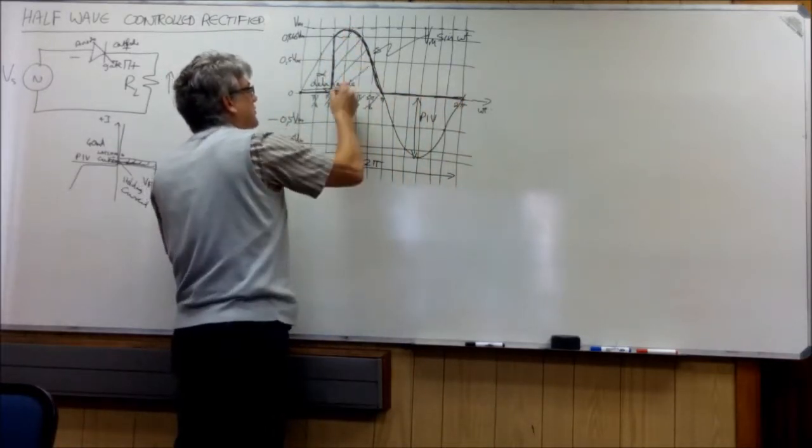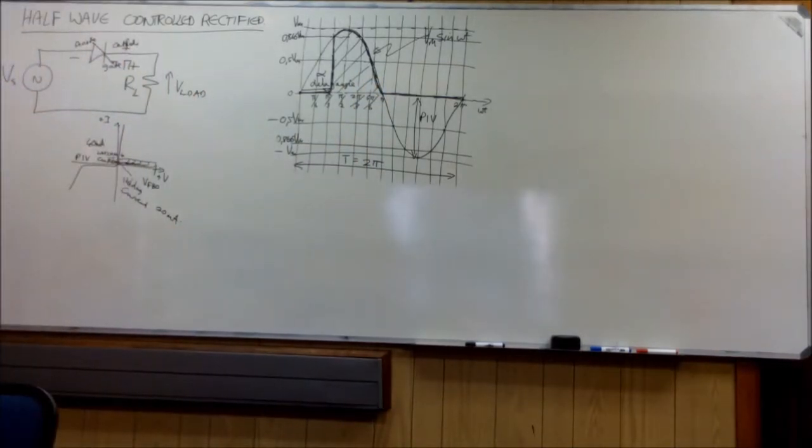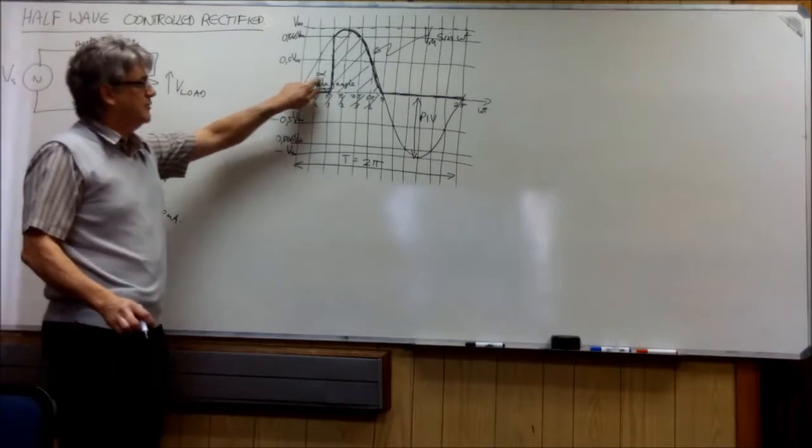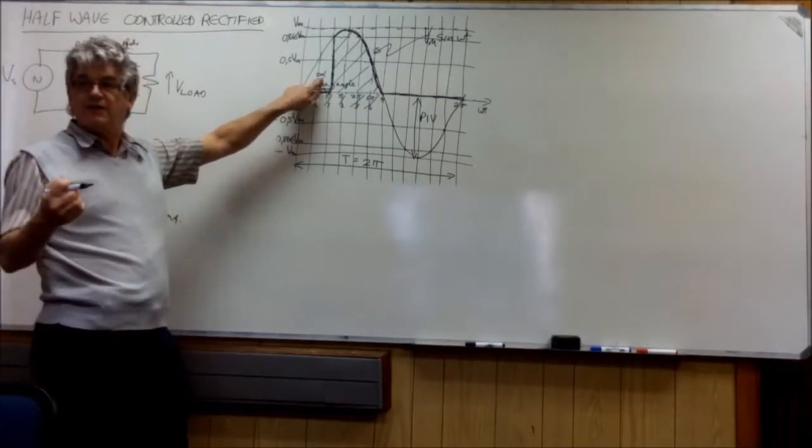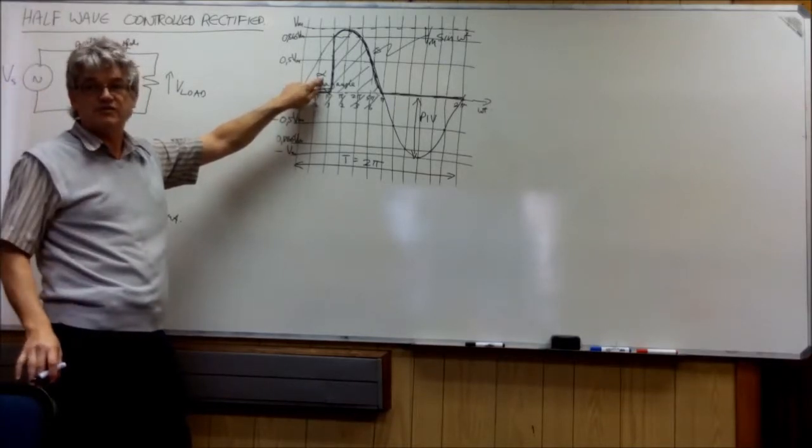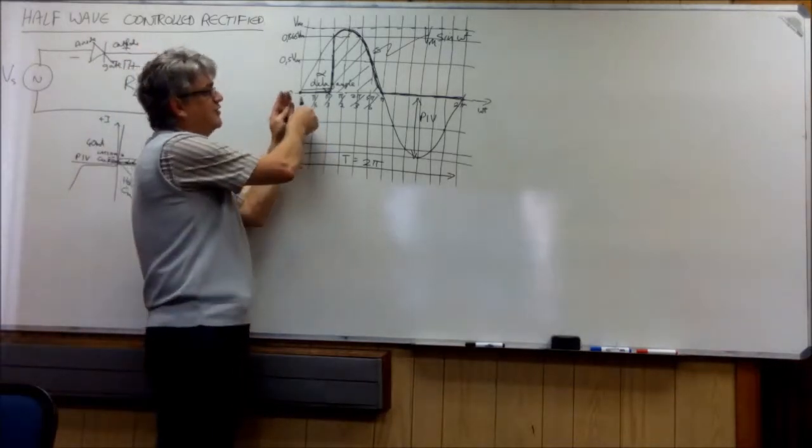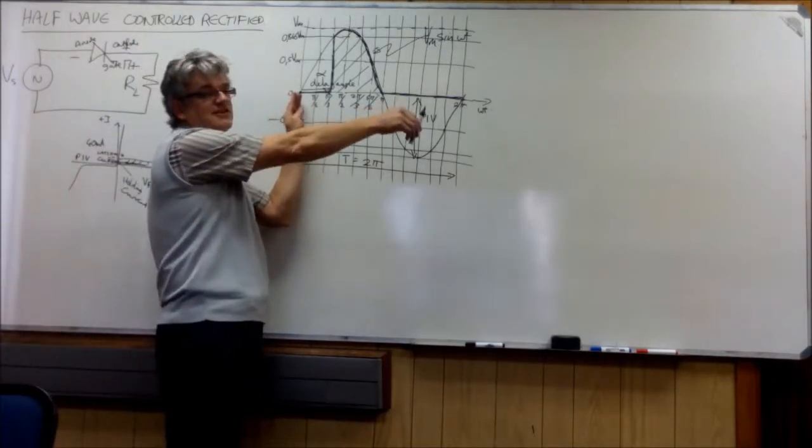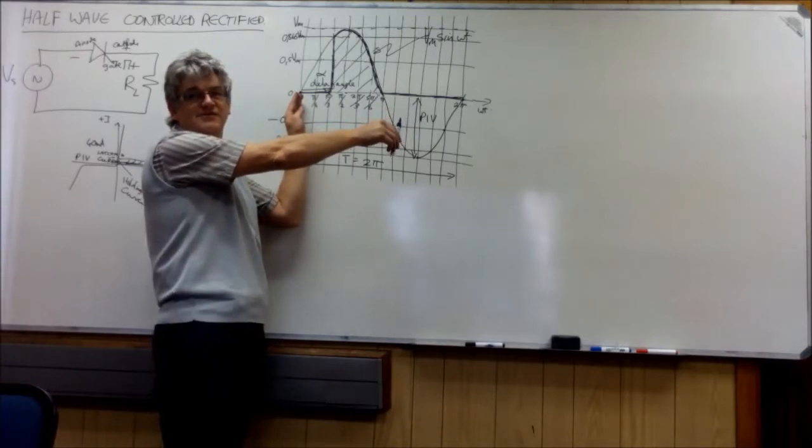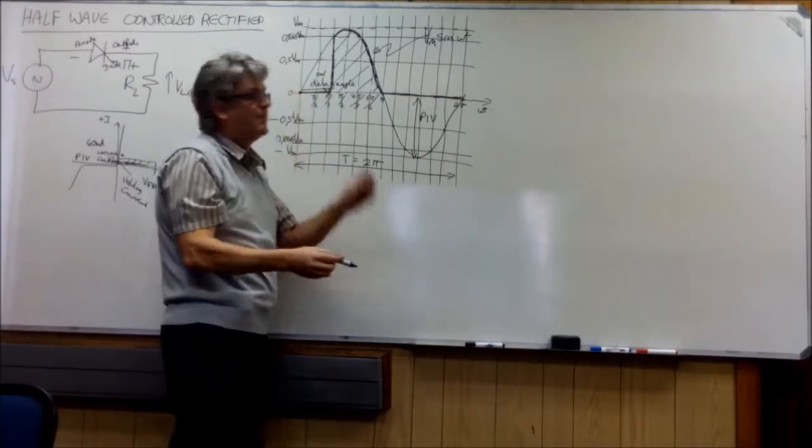And if we now go and we want to say, we want to determine the average voltage over the load, we now have to bring in the delay angle alpha. And if we use a variable, we can get a generic formula. A formula which we can go and use in every situation. With this constraint that you cannot have an alpha greater than pi. Because it doesn't make sense. So the delay angle will vary from zero to pi.